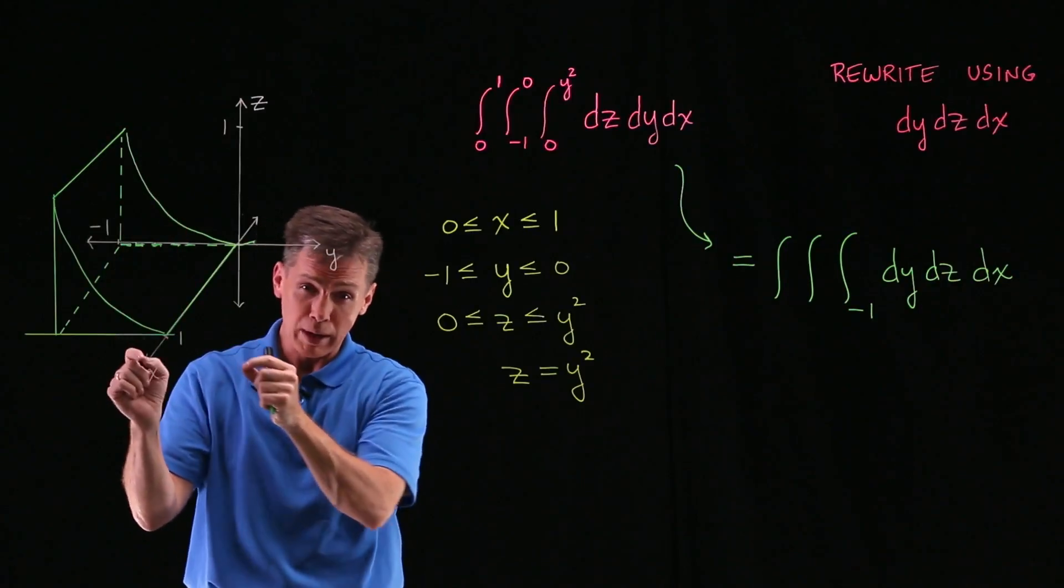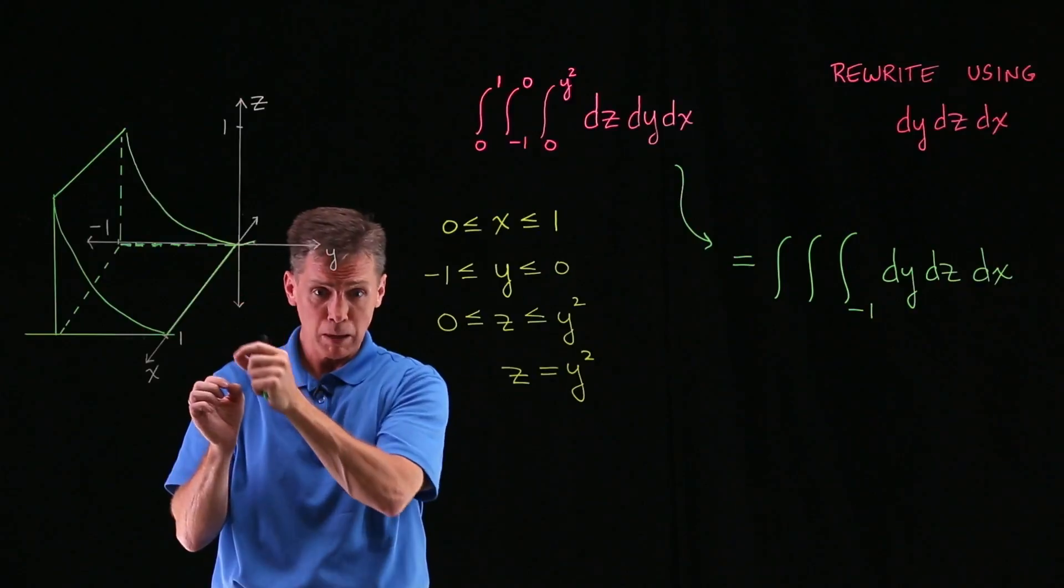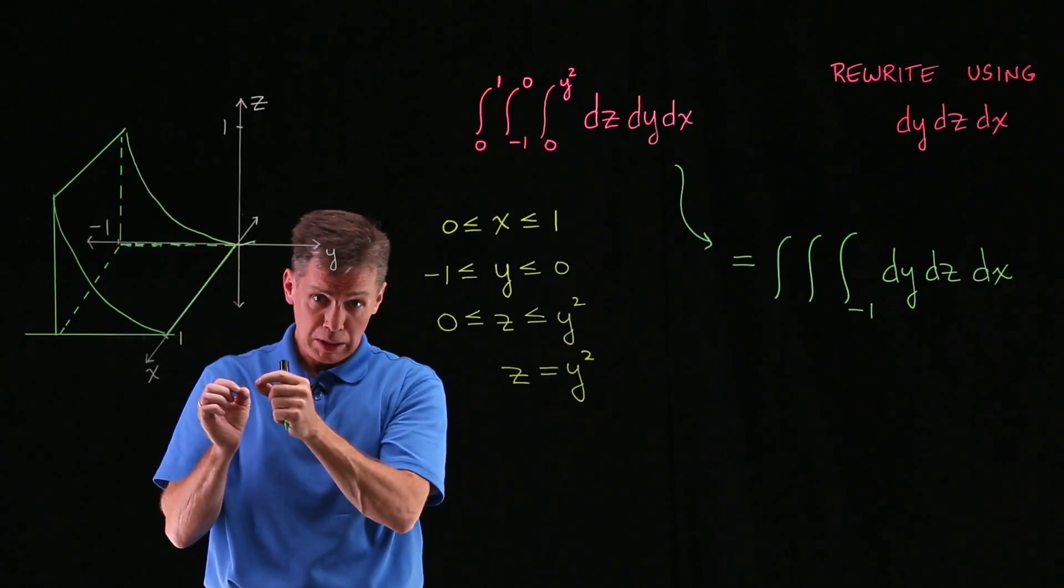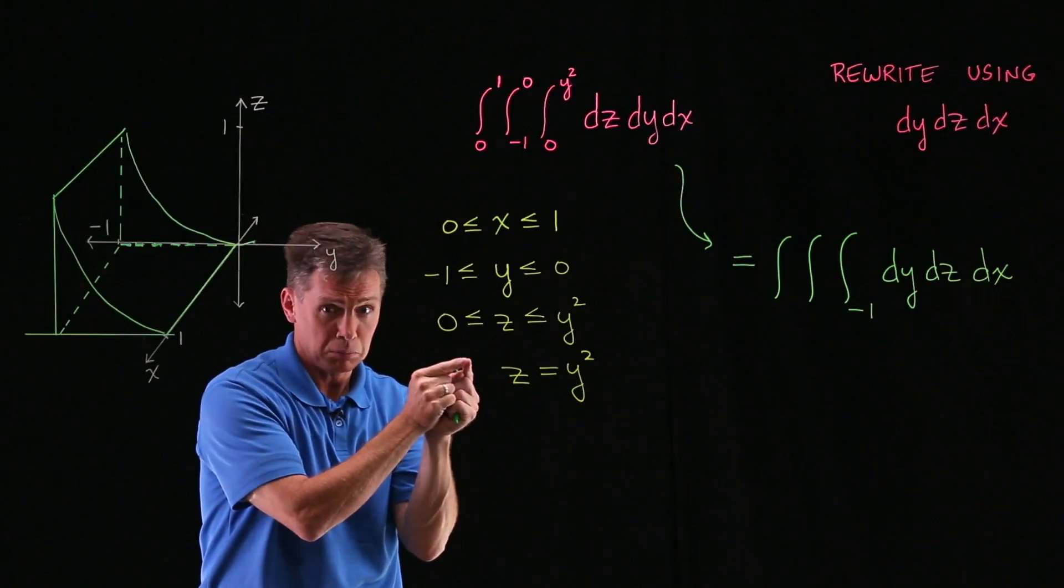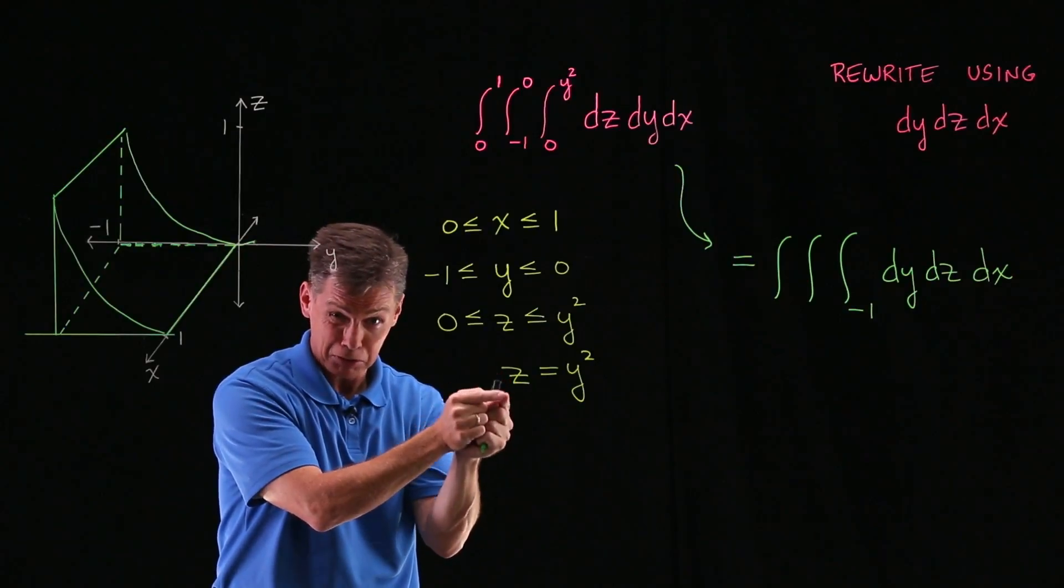So the highest y values are going to be right on that parabola, which means I need to express this parabola in terms of z. I need it as a function of z.